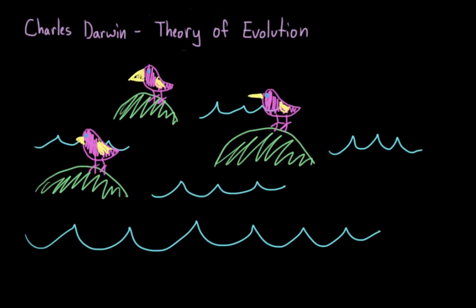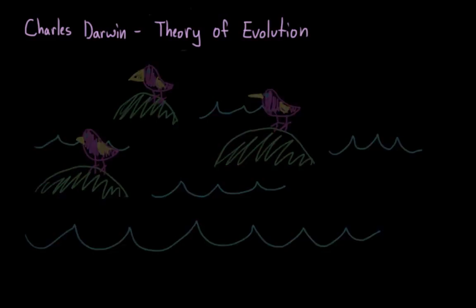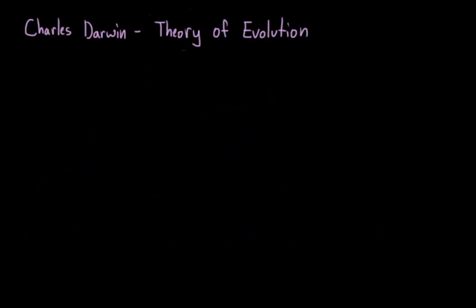He theorized that this occurred because of interactions between the organisms and their environments. The animals who are best suited for living in certain environments would have the greatest likelihood of both surviving in that environment and passing on their genes.